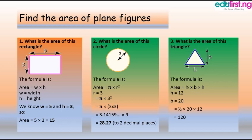Question three: what is the area of a triangle, given that the height is 12 and the base is 20? The area of a triangle is half base times height. Therefore, half times 20 times 12 — using your calculator, the answer is equal to 120. With this understanding, we can solve any problem that has to do with area of a plane figure. Once you have the formula, you just insert the values and you get your answer.